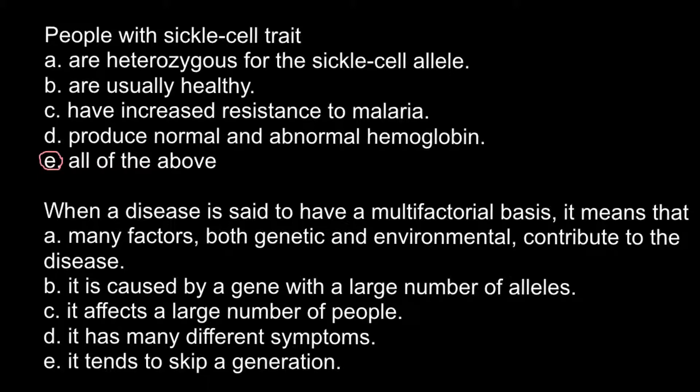So now we can move to the second question: when a disease is said to have a multifactorial basis, it means — answer A: many factors, both genetic and environmental, contribute to the disease; answer B: it is caused by a gene with a large number of alleles; answer C: it affects a large number of people; answer D: it has many different symptoms; and answer E: it tends to skip a generation.